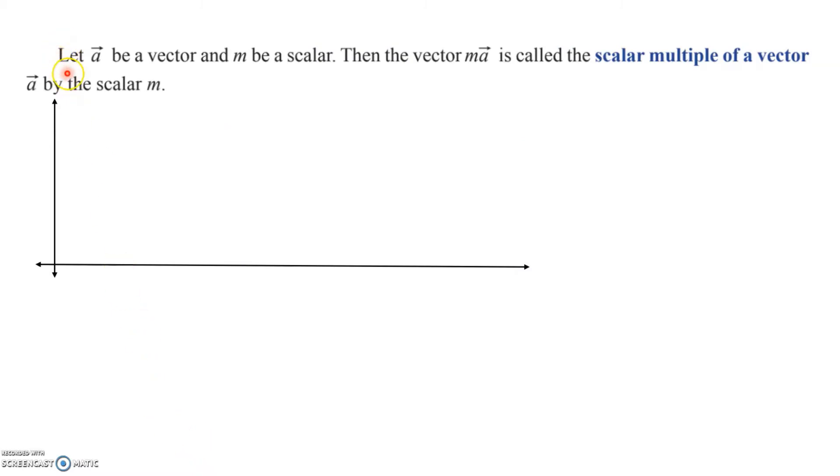Let's consider a vector a and a scalar quantity m. Our objective is to find what is m vector a. This is going to be a vector and this kind of multiplication is called a scalar multiple of a vector.